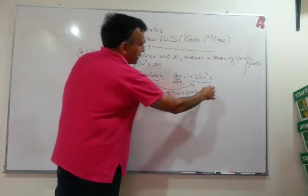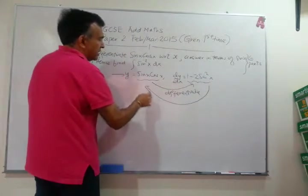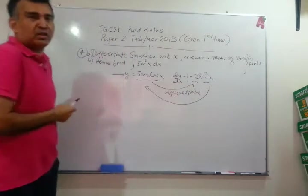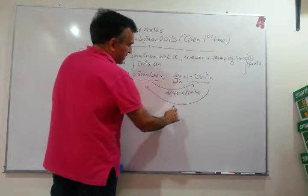So, which means if you integrate 1 minus 2 sine squared x, you must get sine x cos x plus x.